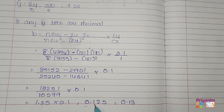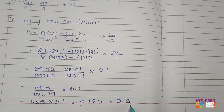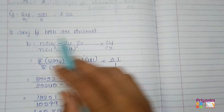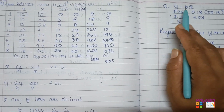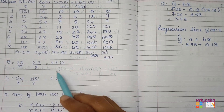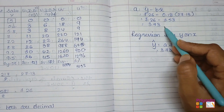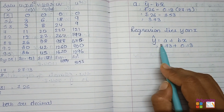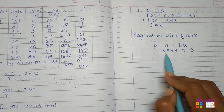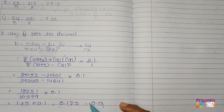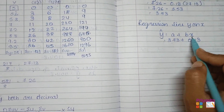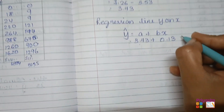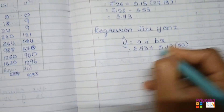Since the digit after the decimal is 5, the next digit increases, so b = 0.13. Next is a, where we keep Y-bar minus b times X-bar. Here you can see the calculated values. After this calculation, the regression line Y on X has been formed with the values of a and b kept. The value of X shown in the textbook will be 0.5.